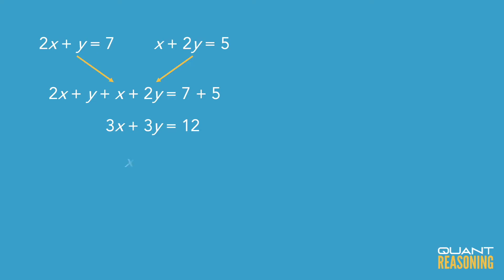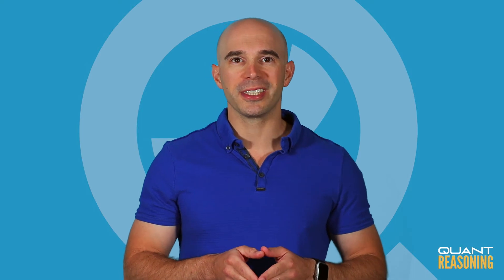We should divide both sides by 3 to get x plus y equals 4, and then divide both sides by 3 again to get what the question is asking for. So the answer is 4 thirds.